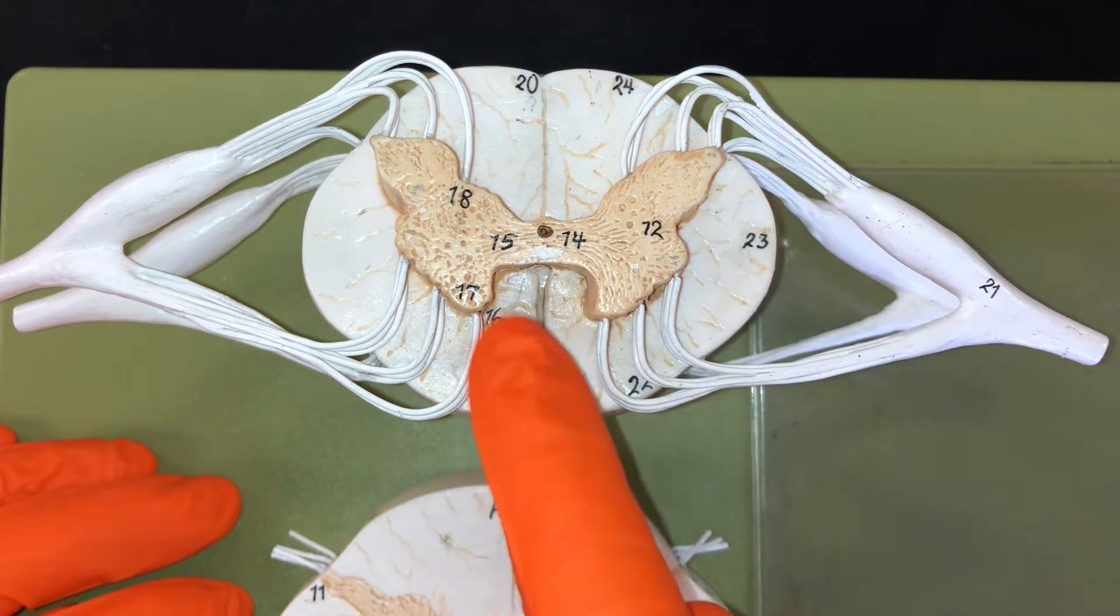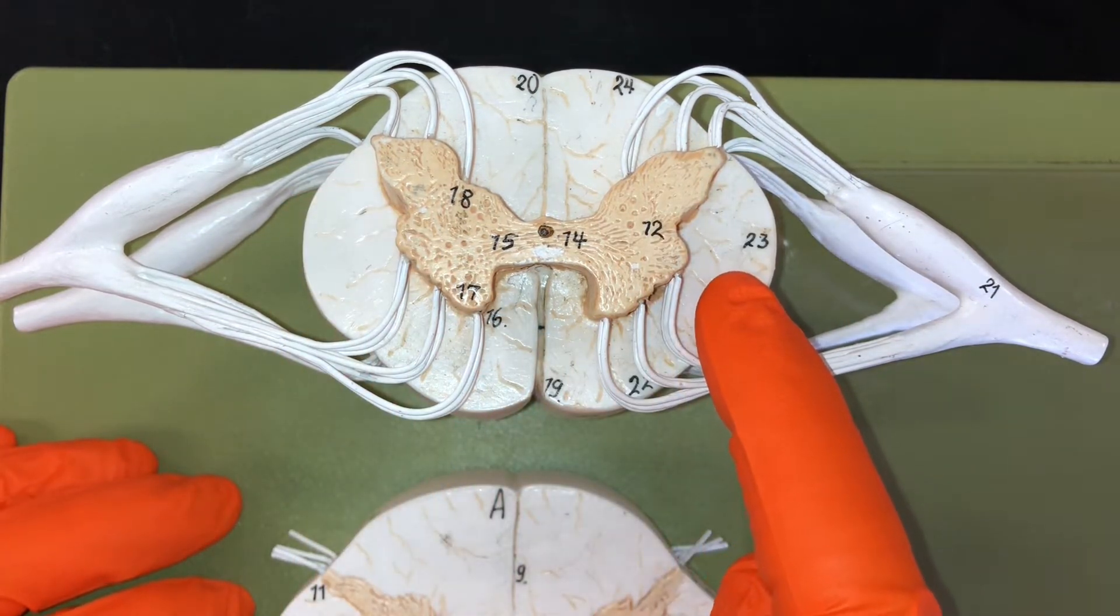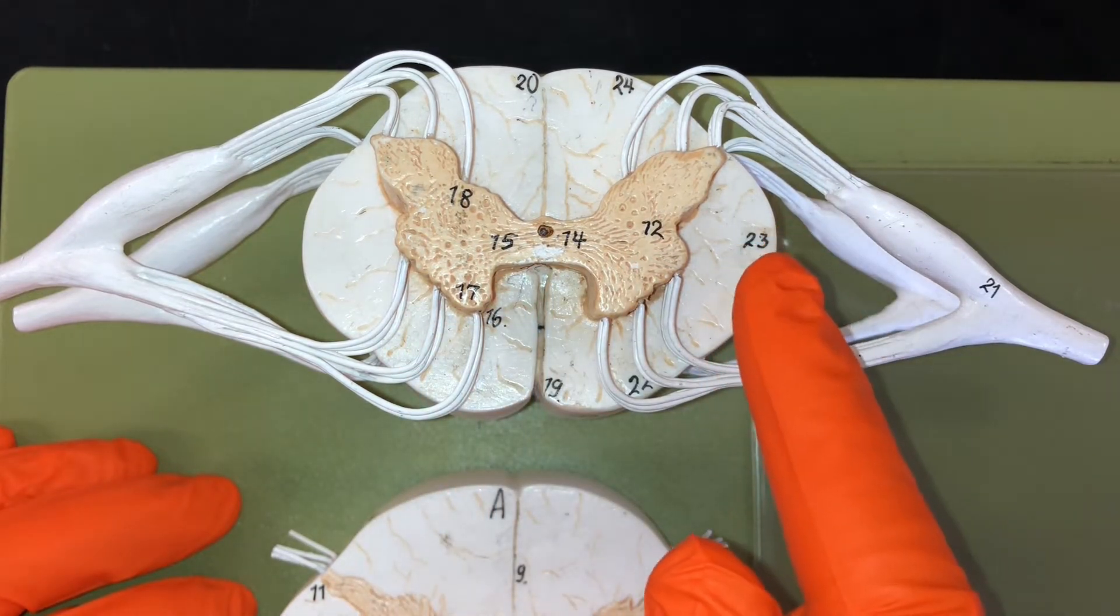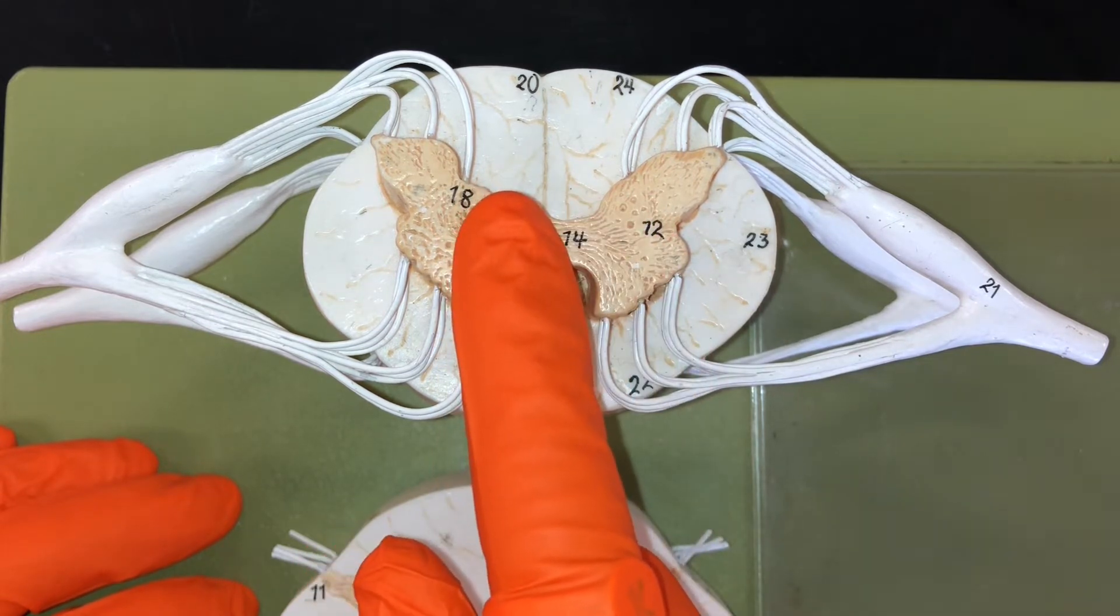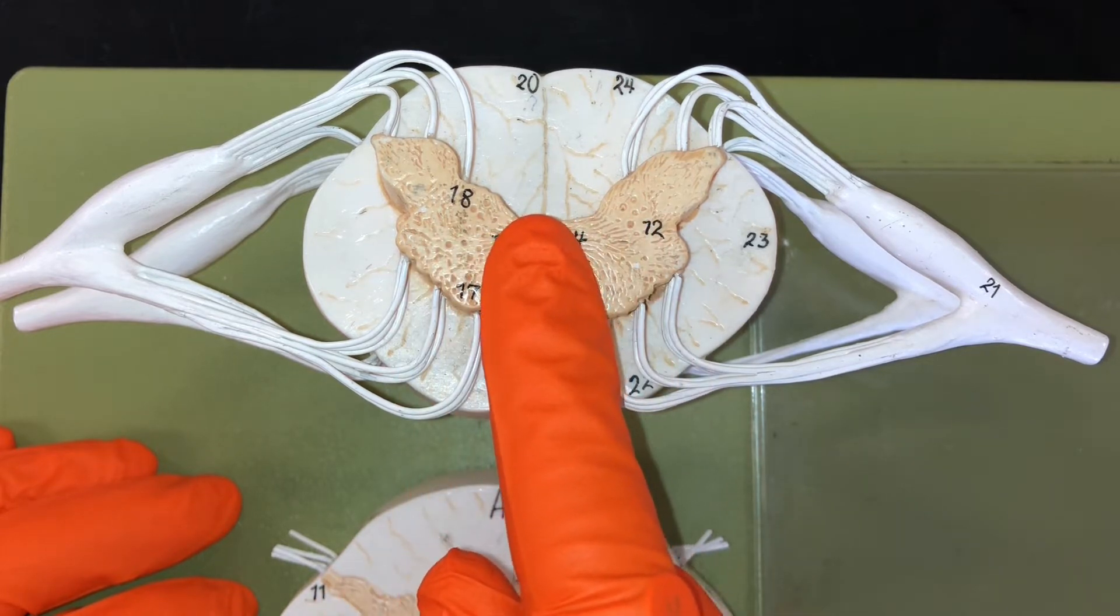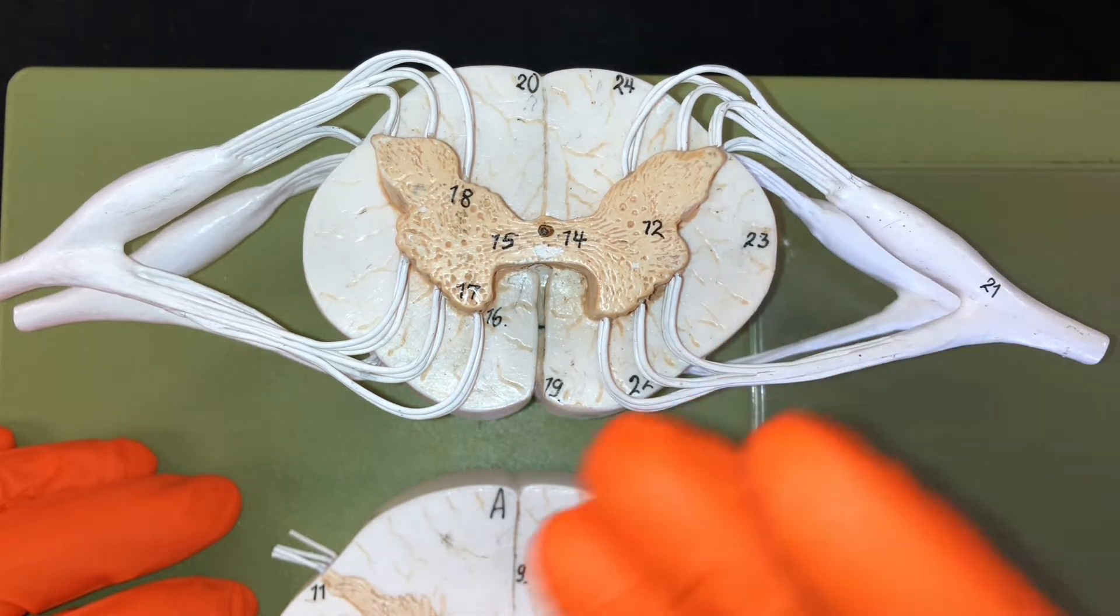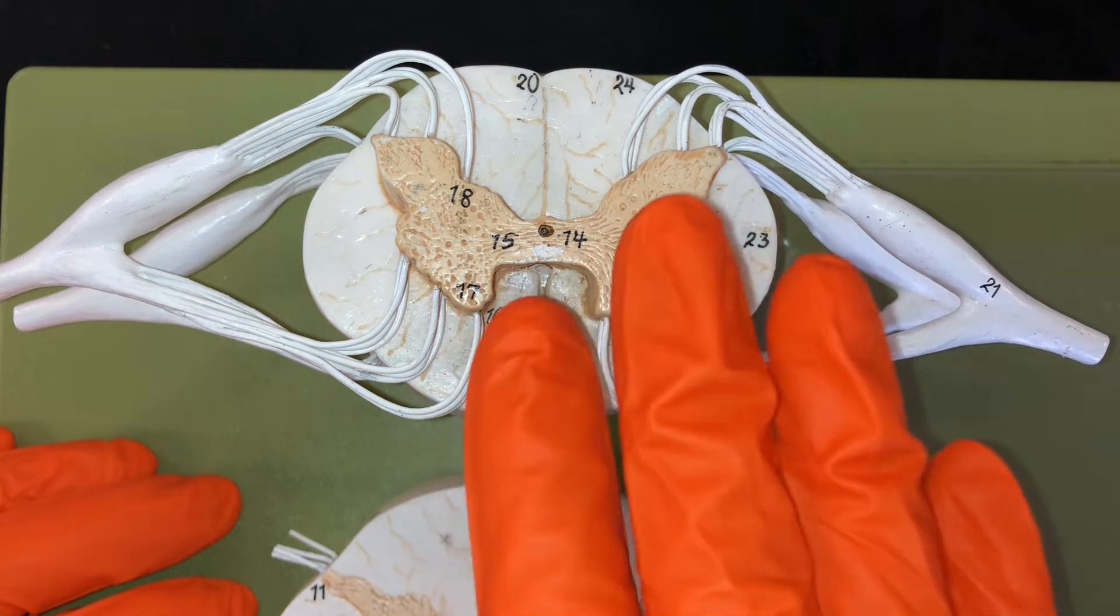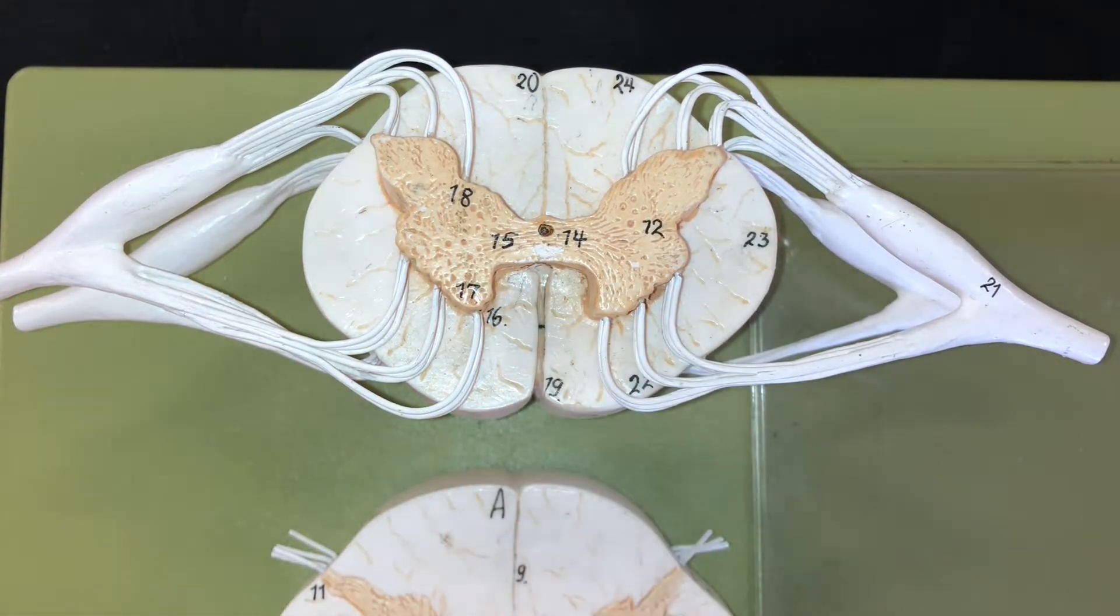When we look at the white matter here, these are referred to as funiculi, and the reason why they are white is because we are seeing the myelinated axons. Gray matter is responsible for integrating and processing information via those synapses we looked at earlier, and then the white matter is responsible for relaying nerve signals along that myelin sheath.